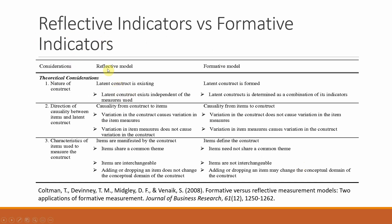There are a few key theoretical considerations. In a reflective model, the latent construct already exists independently — as with customer commitment — whereas in a formative model, the latent construct is formed, as in the case of SCI or HDI. The direction of arrows in reflective models is towards the indicators, while in formative models it is towards the construct. Items in reflective models share a common theme and are interchangeable, whereas in formative models items do not share a common theme and are not interchangeable.